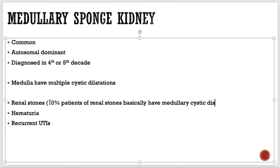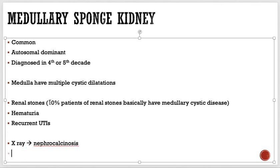Stone formation is very common in medullary sponge kidney — around 10% of patients with renal stones have this condition. On abdominal X-ray or imaging, around 50% of patients show nephrocalcinosis. Most of the time it is an incidental finding. The diagnosis is made by intravenous pyelography — contrast medium fills the medulla and shows a radial pattern.